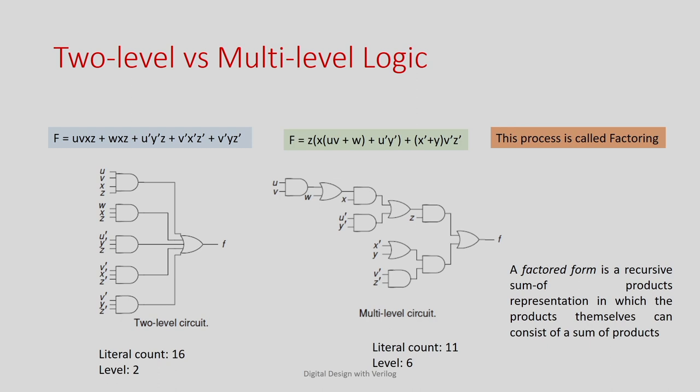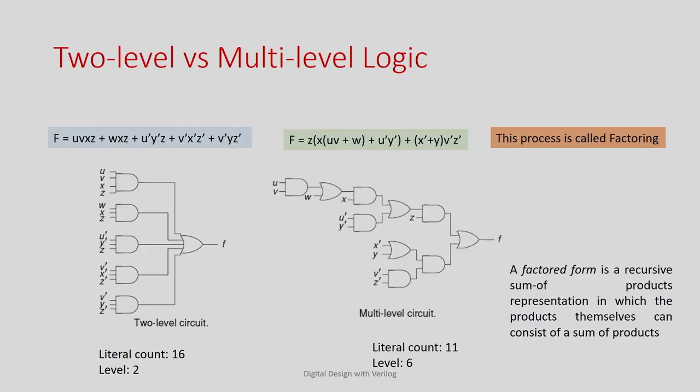As discussed in the previous class, given a Boolean expression, so far we have been used to represent it as a two-level representation — a sum of products — where you have effectively one AND plane followed by an OR plane, giving two levels. But we have seen certain scenarios like parity bit generators, or whenever there are multiple outputs, where it is useful to have a multilevel representation.